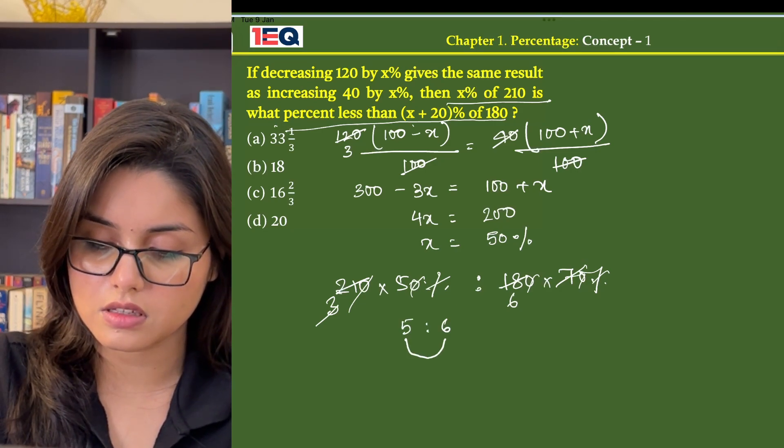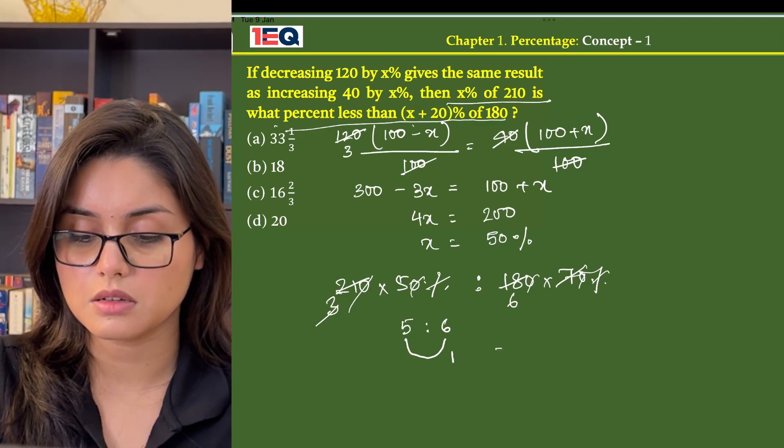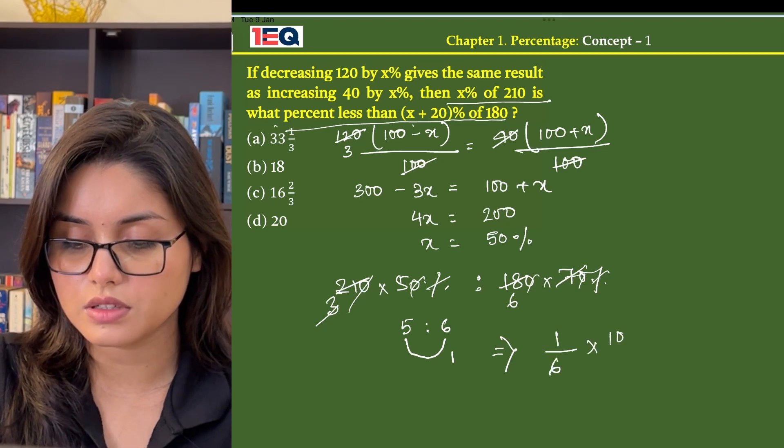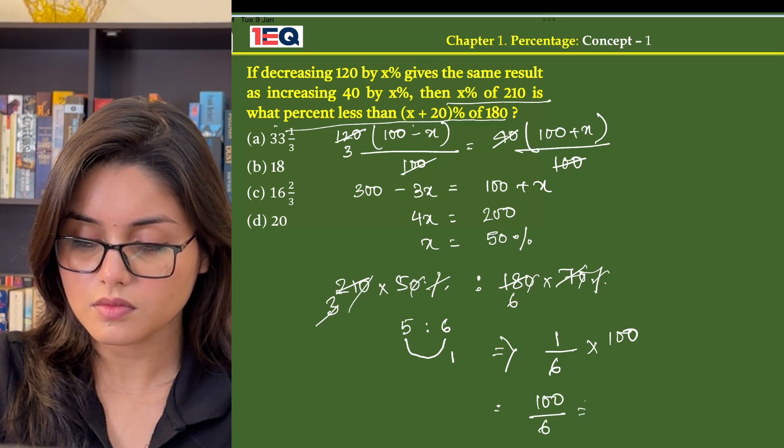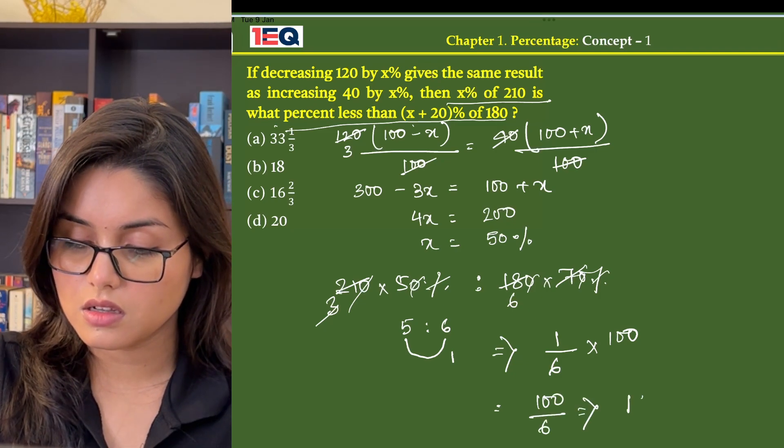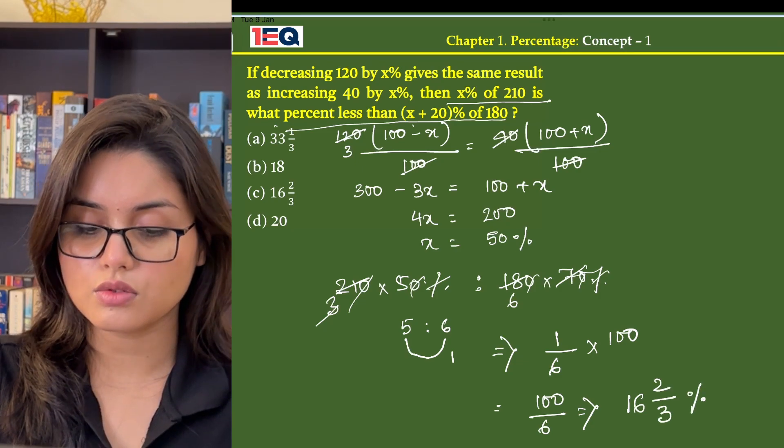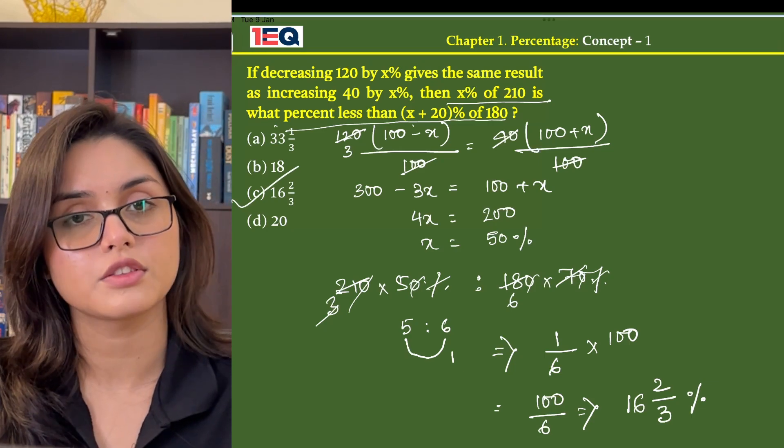And the difference here is equal to 1. Now as we can see that the difference is 1, that means the required percentage is (1/6) × 200, that is 100/6, which gives us 16⅔ percentage. So the answer to this question is option C, that is 16⅔.